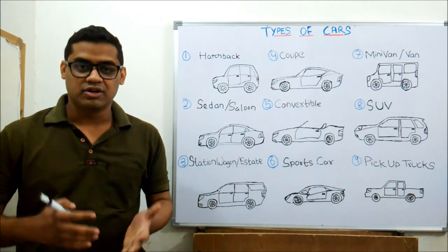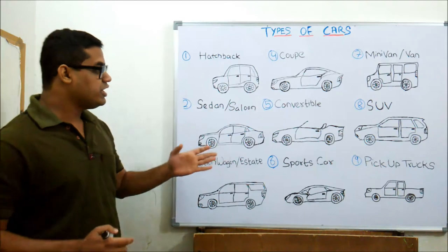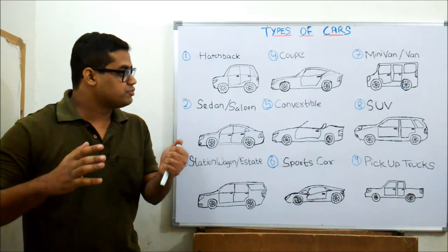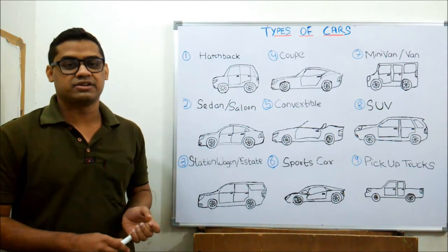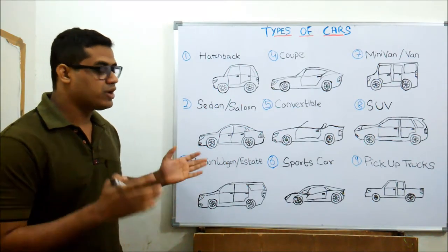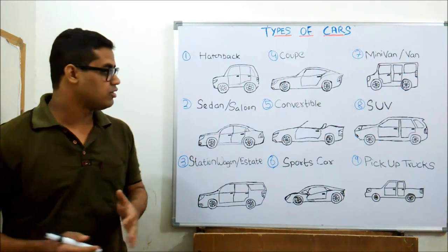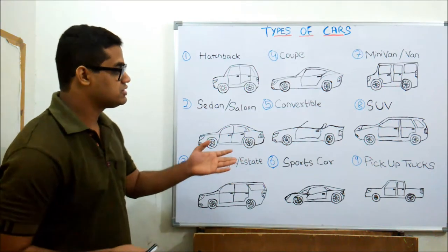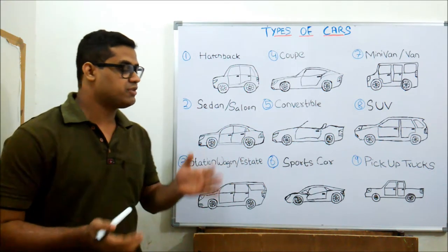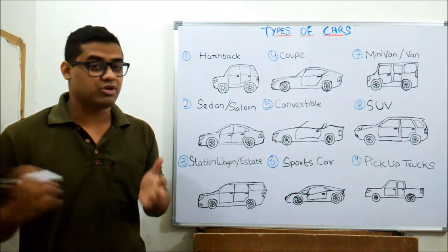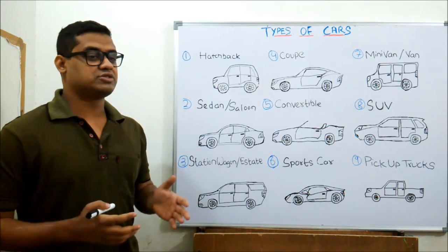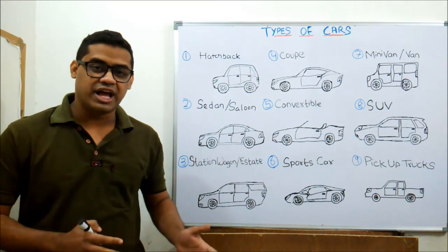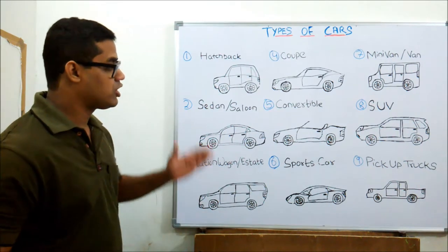SUV is that utility vehicle which has got some basic sports quality in it. They're not mainly into economical driving or fuel efficiency - they're mainly into performance driving. Even if carrying seven passengers on board, companies make SUVs capable enough to touch 200-250. They have awesome acceleration and quite powerful engines.